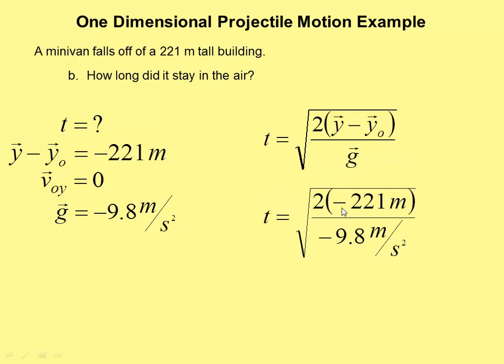Plug in our numbers. And notice again, if we had missed the negative on the vertical displacement, we would have ended up with a negative under the square root. And that's an imaginary number, and I want a real answer. So, plug those numbers in. You get 6.7 seconds.